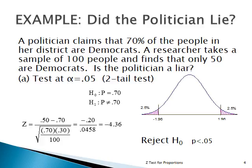We know that between plus 1.96 and minus 1.96 in the Z distribution gives 95% of the area. We're willing to accept a certain amount of deviation from 70% as sampling error — maybe 71, 68, or 69 — but if the Z-score goes beyond minus 1.96 or plus 1.96, we will say the politician is lying.